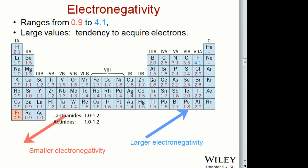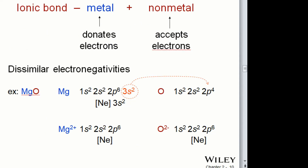Why does electronegativity become less as you go down the periodic table? As you go further from the nucleus, the valence electrons are shielded by the d orbitals — giant complex clouds of electrons that shield them — and they are also just further from the nucleus. That is why elements are less electronegative further down in the table. Now that we have a basic understanding of the periodic table and how electrons are accepted or given away, we can go into bonding.